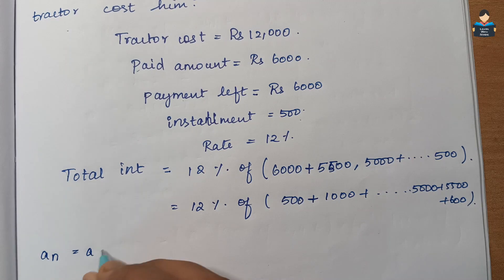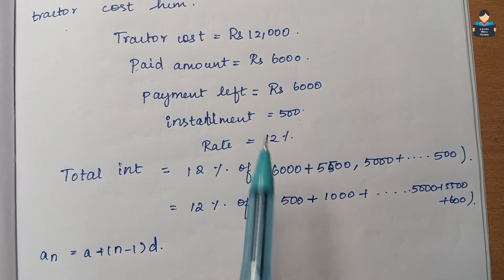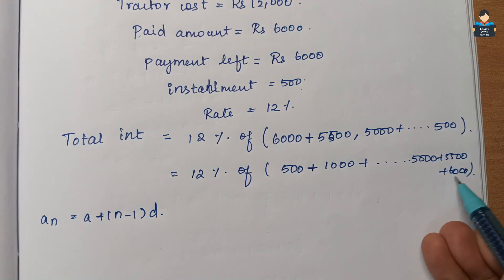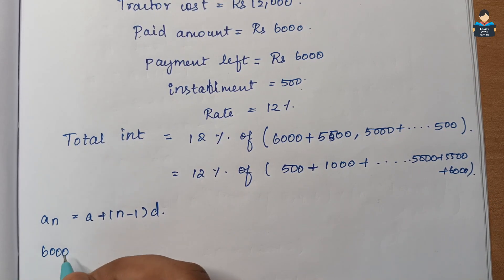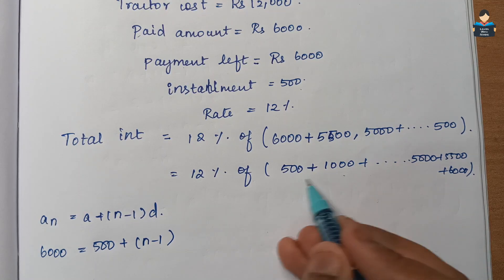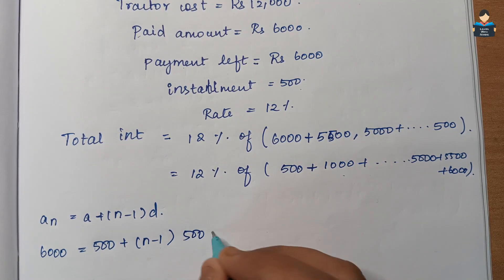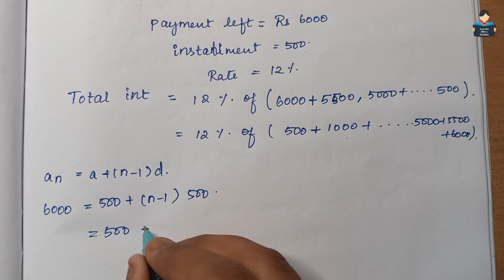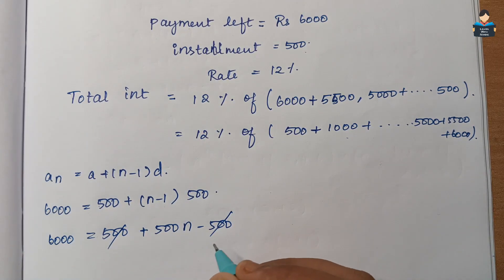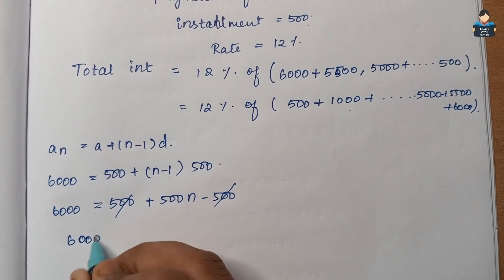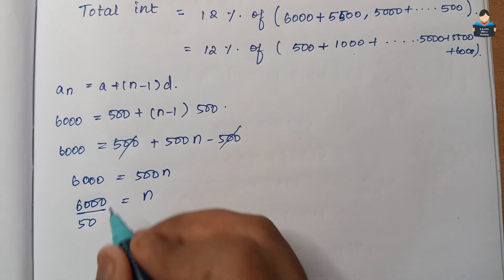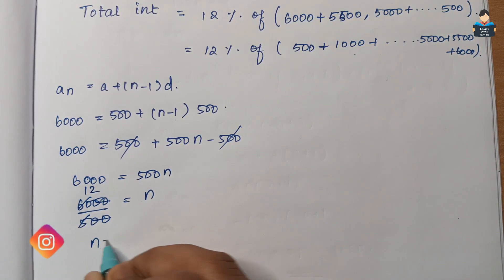Using aₙ = a + (n−1)d, the last term is 6,000 with a = 500 and d = 500. So 6,000 = 500 + (n−1)×500, giving 500 + 500n − 500 = 6,000, so 500n = 6,000, and n = 6,000 ÷ 500 = 12. So n = 12 annual installments.